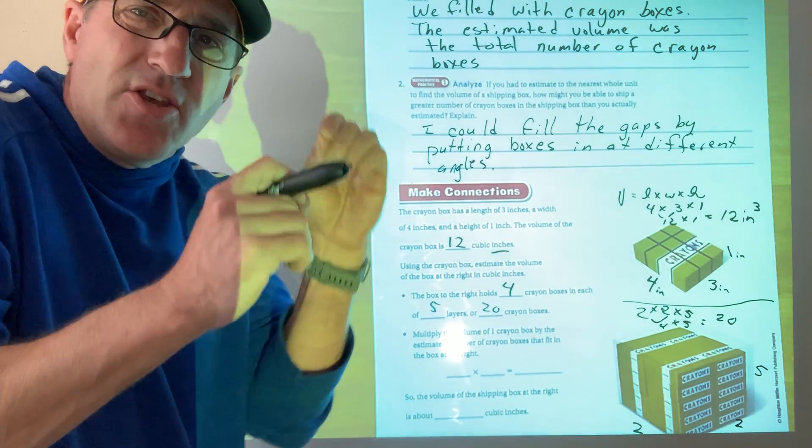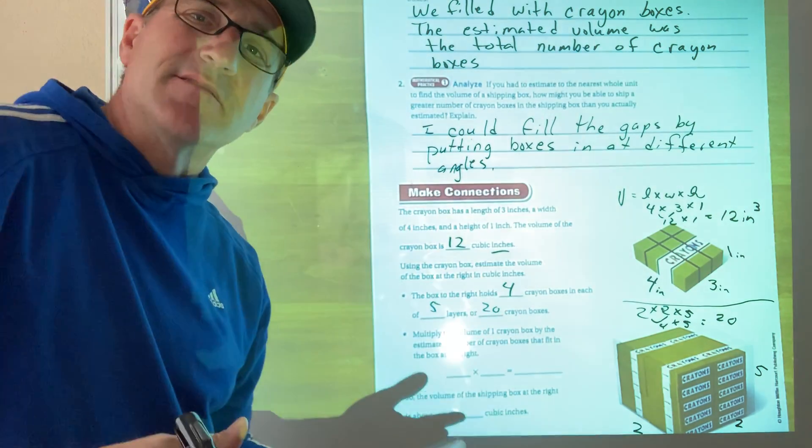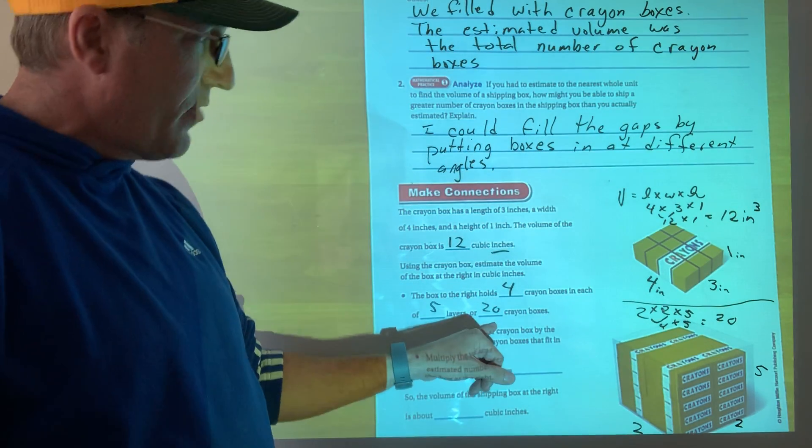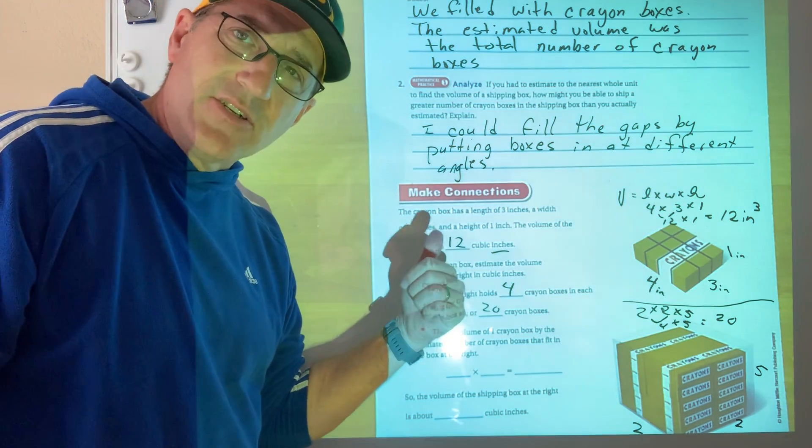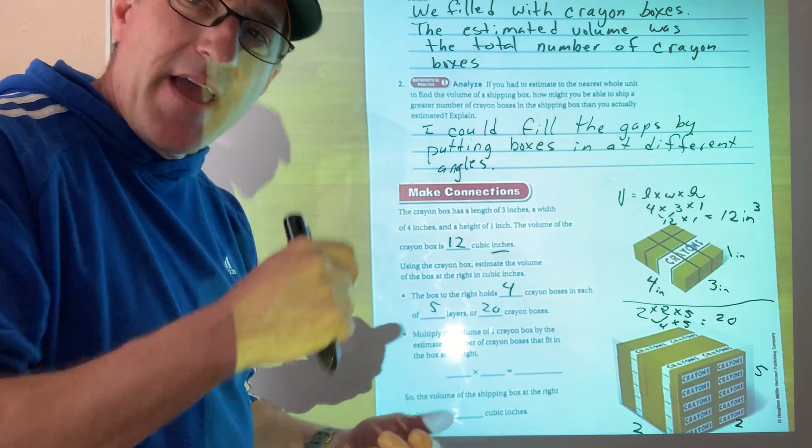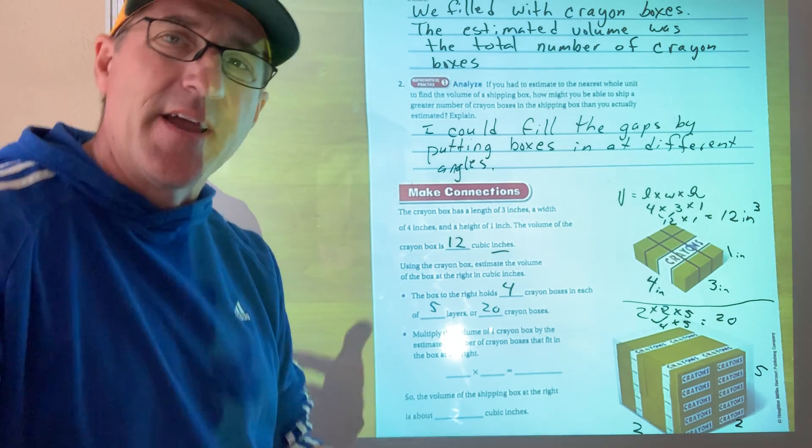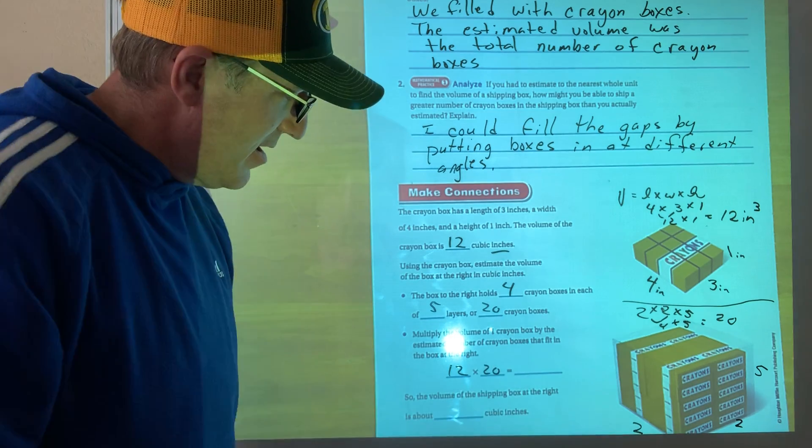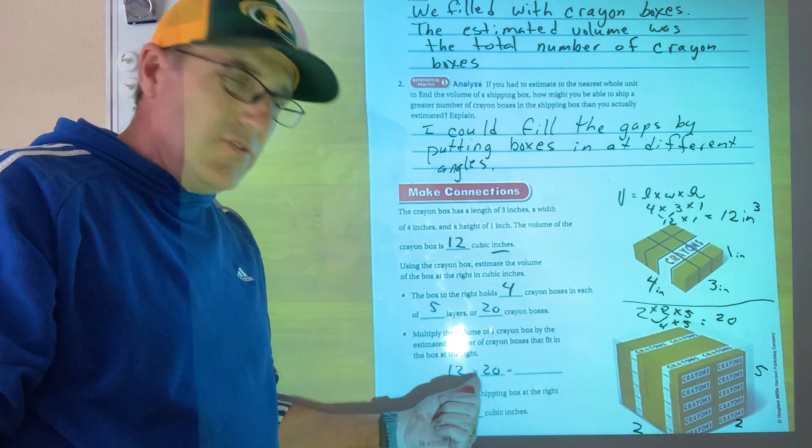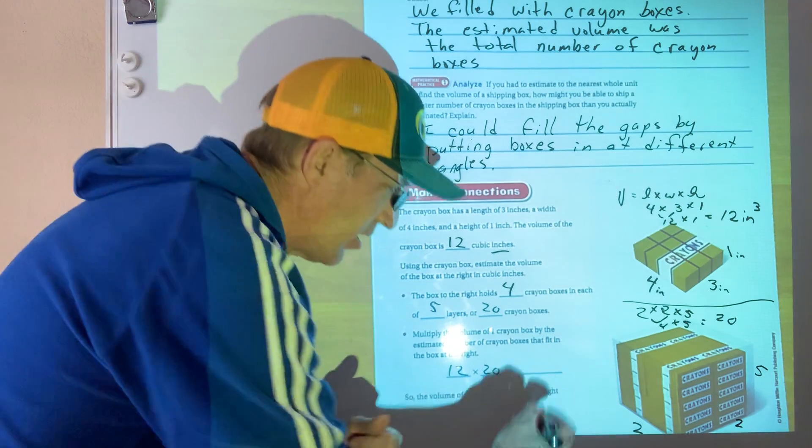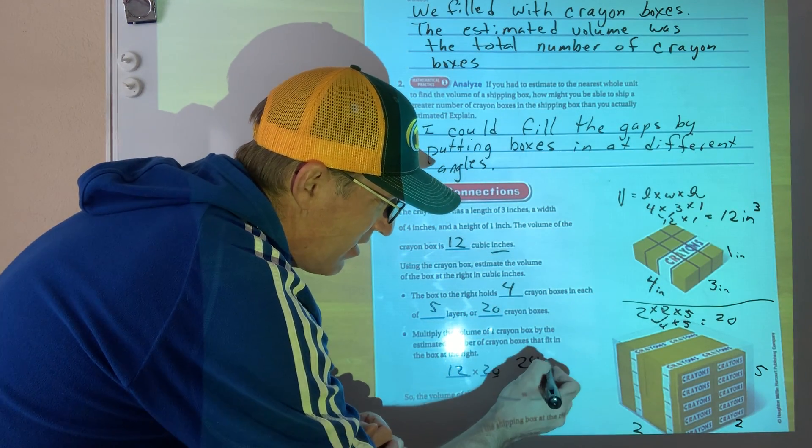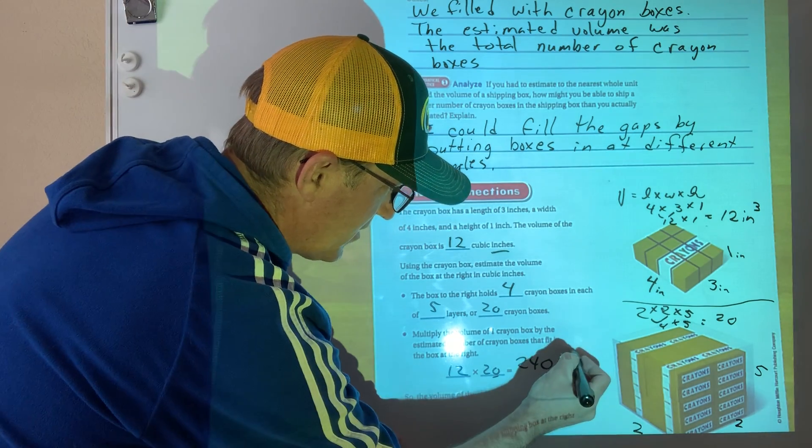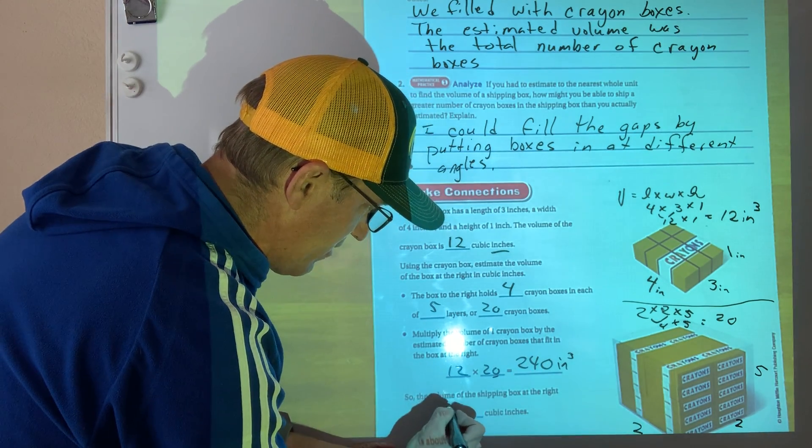So instead of cubic inches or cubic this, it's cram boxes because they have their own volume. So since I have 20 cram boxes and they're each 12, I can get my estimate by adding 12 twenty times or just multiplying 12 times 20. So I take 12 times 20. Okay. Love it when I get the zero here. What's two times 12? 24. And then I add my zero on the end. 240 inches cubed. And then I write 240 down here.